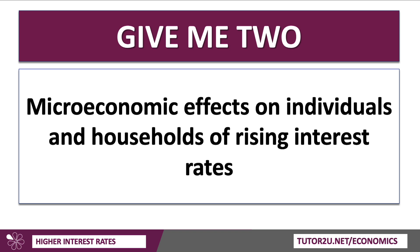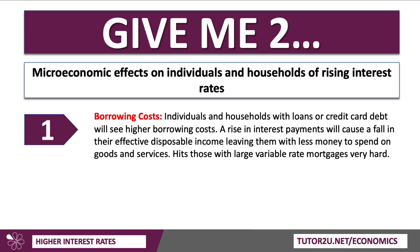What are some of the micro effects on individuals and households of rising interest rates? One consequence is the cost of borrowing. Individuals and households with loans, credit card debt, personal loans, and mortgages will see higher borrowing costs — they'll have to repay more interest. That will cause a fall in their effective disposable income, leaving them with less money to spend on other goods and services. It hits those with large variable rate mortgages very hard, particularly if you've borrowed heavily at a variable rate of interest.